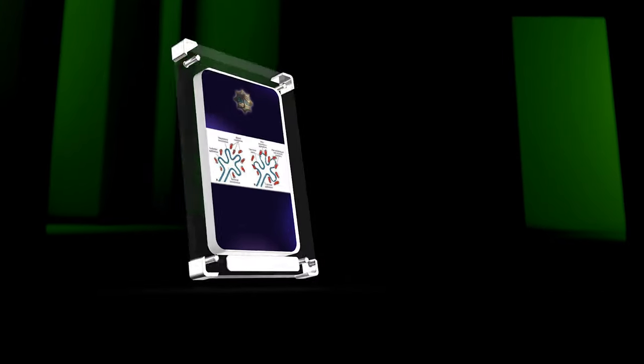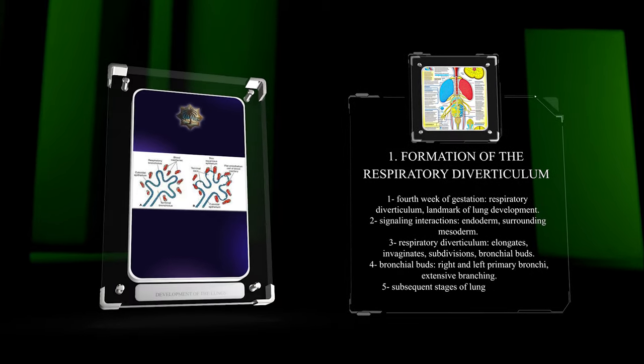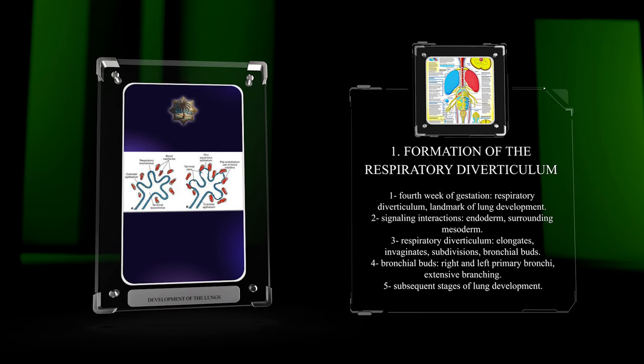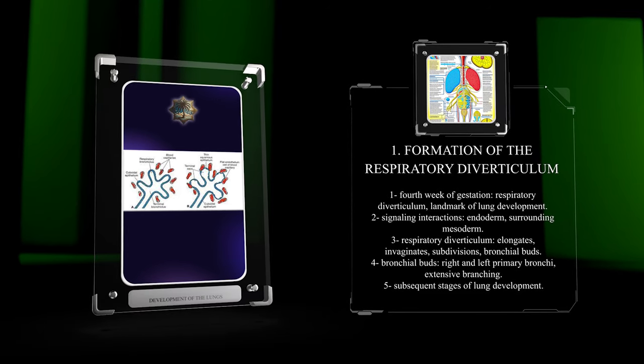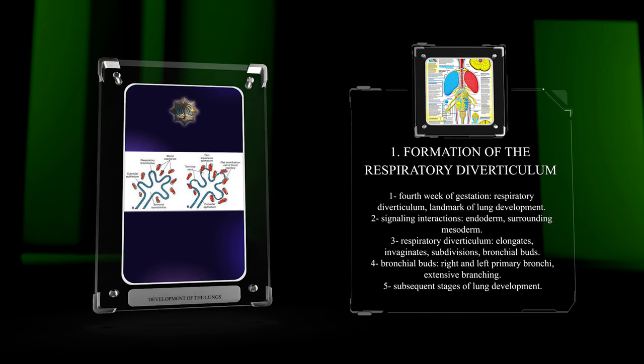During the fourth week of gestation, a small evagination emerges from the ventral wall of the foregut endoderm. This evagination, known as the respiratory diverticulum, is the primary landmark of lung development. It forms as a result of signaling interactions between the endoderm and the surrounding mesoderm.